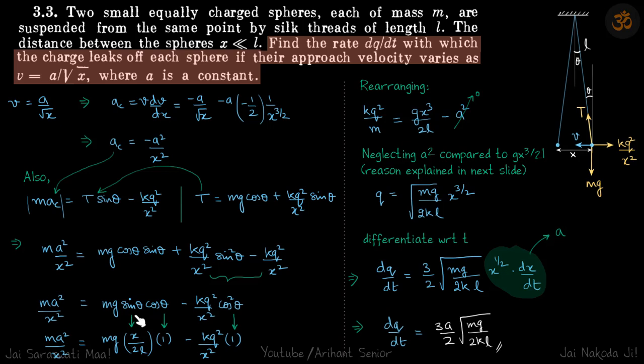Here we are going to start taking assumptions. Sin theta can be assumed as x by 2l and cos theta can be assumed as 1. This gives our equation kq square by m is equal to gx cube by 2l minus a square. Here we are neglecting a square compared to gx cube by 2l.